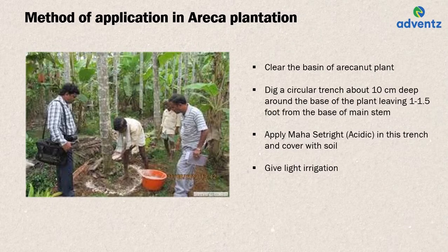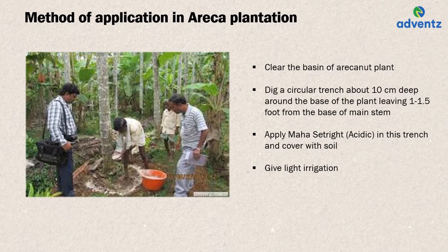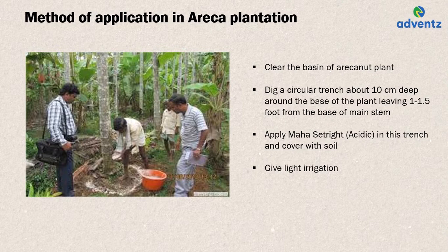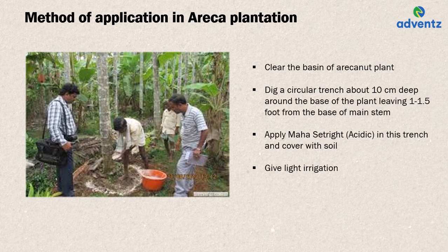To leverage the benefits of Mangala Mahasatrite acidic, first clear the basin of a plant by scraping off the surface topsoil lightly. Then dig a circular trench about 10 cm deep around the base of the plant, leaving 1 to 1.5 feet from the base of the main stem. Apply Mangala Mahasatrite acidic in this trench and cover with soil. Giving light irrigation after application helps in quicker reaction.